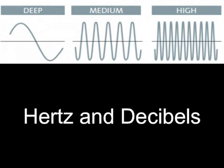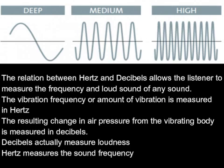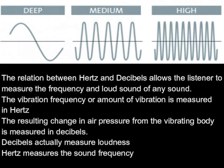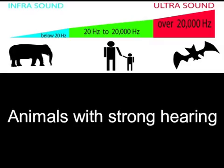The relation between Hertz and decibels allows the listener to measure both the frequency and loudness of any sound. The vibration frequency, or amount of vibration, is measured in Hertz. The resulting change in air pressure from the vibrating body is measured in decibels. Decibels measure loudness, while Hertz measures sound frequency.